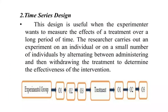Next is Time Series Design. In this design, only one group — the Experimental Group — is present, and there is no Control Group. This design is useful when the researcher wants to measure the effects of a treatment over a long period of time. Only one Experimental Group is there, and the Control Group is absent.